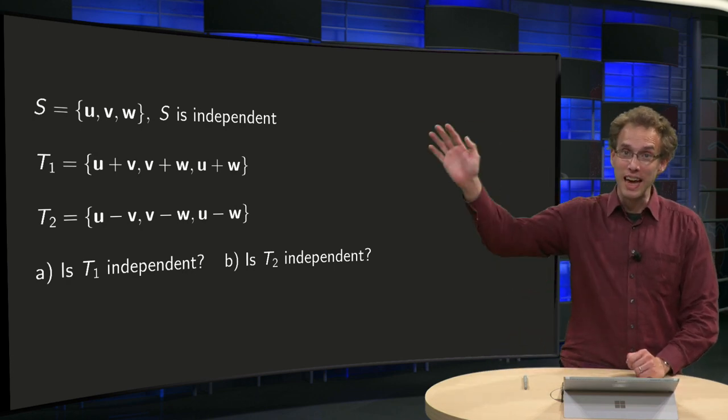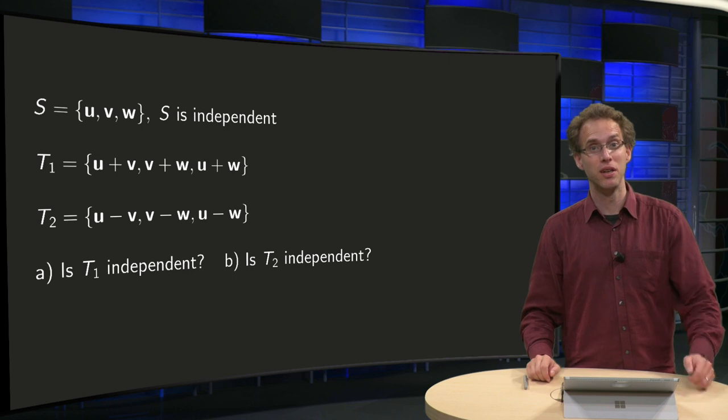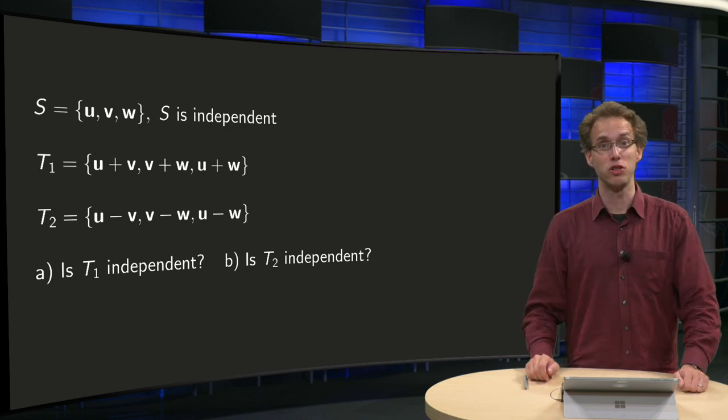We know that the set S over here is independent, but we do not know the vectors u, v and w.